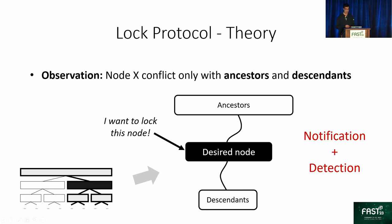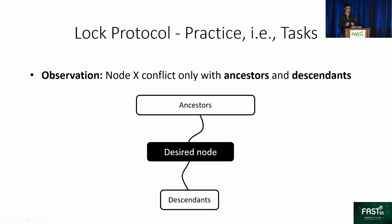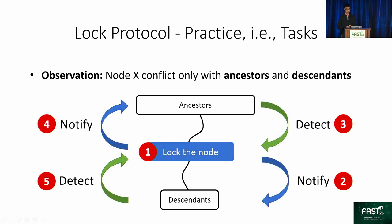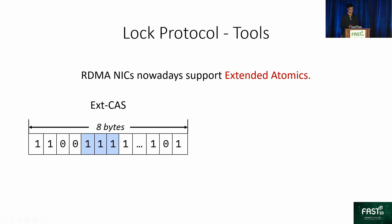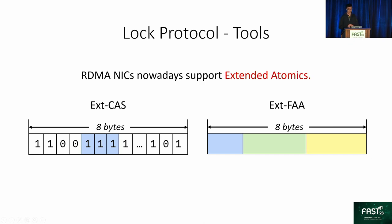Our approach in designing the lock protocol is to modify the content of tree nodes to notify other clients and also detect notifications from other clients. In practice, we decompose the whole protocol into five tasks: locking the desired node itself, and synchronizing with other nodes via notification and detection. The verbs we use are called extended atomics, supported by off-the-shelf NICs. They work similarly to conventional RDMA atomics but with extra bitmasks as parameters. The extended compare-and-swap operates only on user-designated bits in the eight bytes, while extended fetch-and-add can split the eight bytes into multiple fields and add separately within each field.